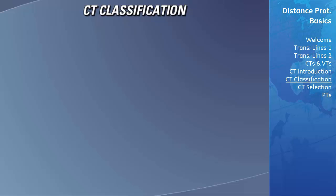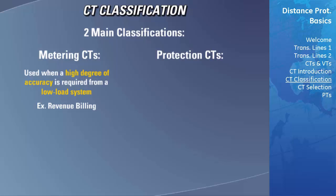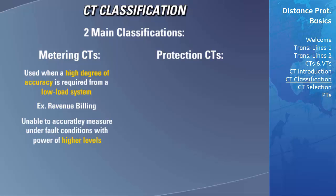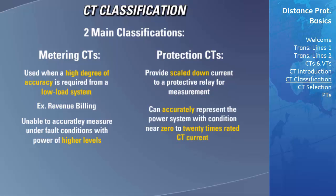CTs are separated into two classifications: metering and protection. Metering CTs are used where a high degree of accuracy is required from low load up to the full load of a system — an example is revenue billing. However, these CTs are unable to accurately measure higher levels of power that would occur under fault conditions. CTs for this function are called protection class CTs. Protection class CTs provide a scaled-down current to a protective relay from conditions near zero current all the way to 20 times rated CT current, with an error percentage commonly ranging from 5 to 10 percent.